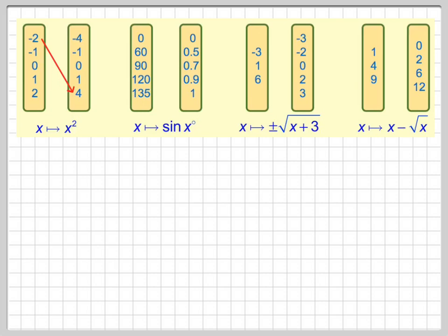Carrying on. Minus 1 squared will go to 1. 0 squared will go to 0, and 1 squared will go to 1, and then 2 squared will go to 4.